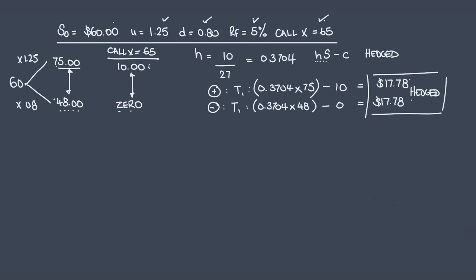Now, if that's the case, we know for a fact what it's worth at T1. We can work out what it's worth at T0. And given it's perfectly hedged, there's no risk. We know we have to discount to get to T0 at the risk-free rate. So at T0, our portfolio will be worth 17.78 divided by 1.05. That is today's portfolio, HS minus C.